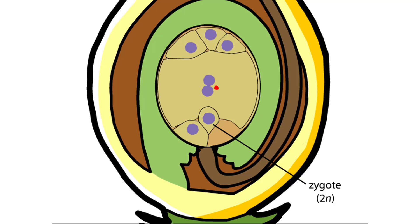As the zygote develops into an embryo, the triploid cell develops into the endosperm, which serves as the embryo's food supply.